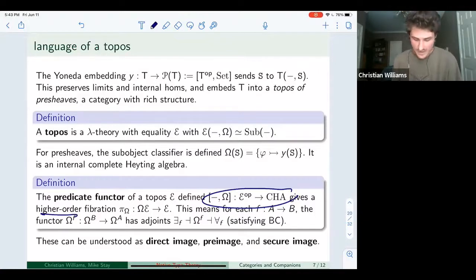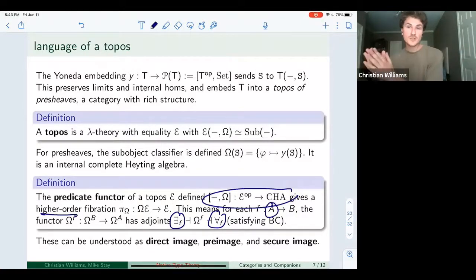So the fiber over each object is this lattice of predicates. This is a very nice structure, very rich structure. And in particular, it's something called a higher order fibration, meaning that it has adjoints to substitution or pre-composition. And you can think of these as direct image, pre-image and secure image. So given a predicate on an object A, you could push it forward using direct image. Or given a predicate on B, you could pull it back using pre-image. Then there's also this extra right adjoint that people don't talk about as much that performs an interesting and refined operation. So altogether, this is a very expressive structure for constructing predicates.